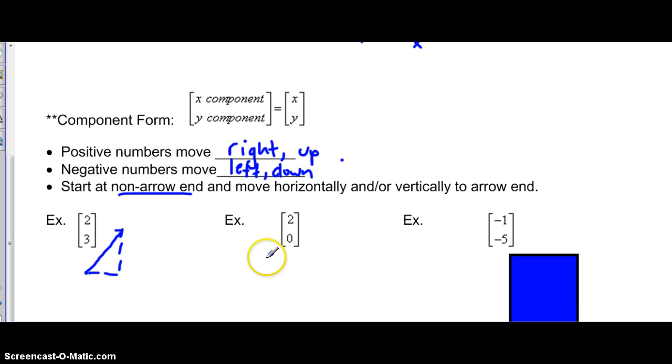Here is an example where we have 2 for the X component and 0 for the Y, and we would end up only moving in the X direction. We have our starting point and just moving two units in the positive direction and there would be no vertical movement.